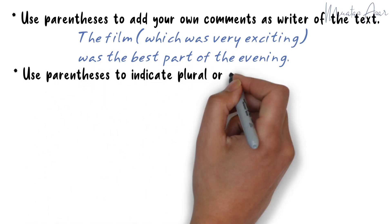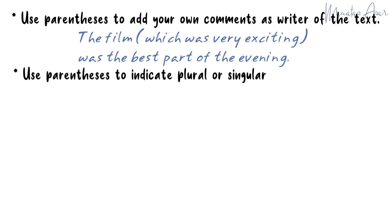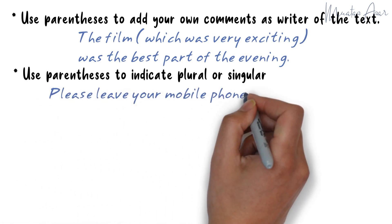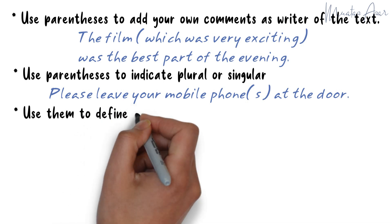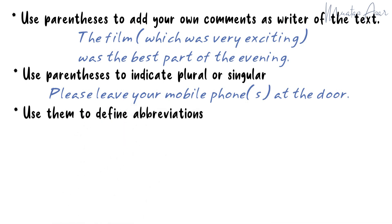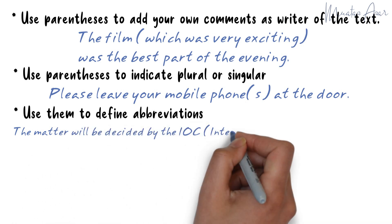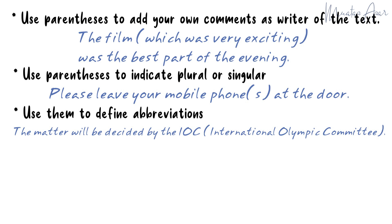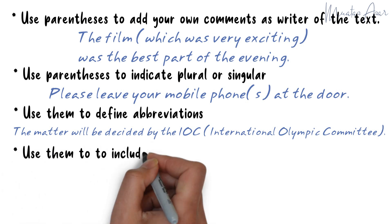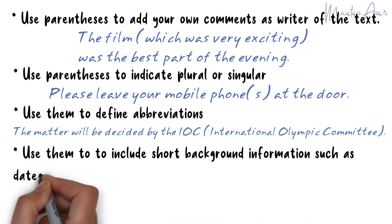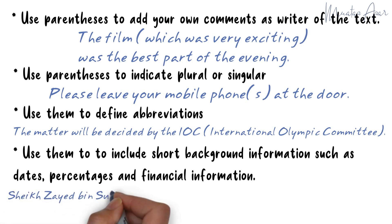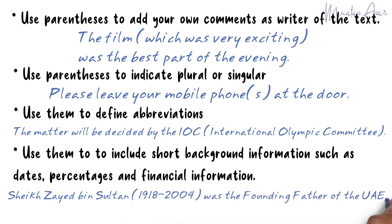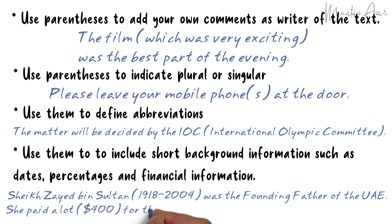Use parentheses to indicate plural or singular: "Please leave your mobile phone(s) at the door." Use them to define abbreviations, and to include short background information such as dates, percentages, and financial information. For example: "Sheikh Zayed bin Sultan (1918–2004) was the founding father of the UAE." Or: "She paid a lot ($400) for the shoes."